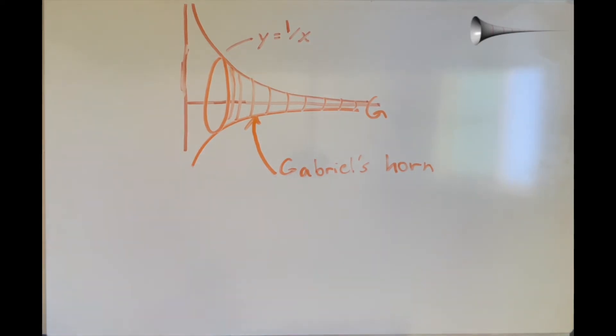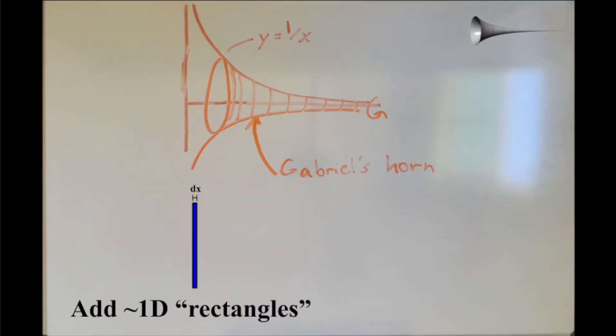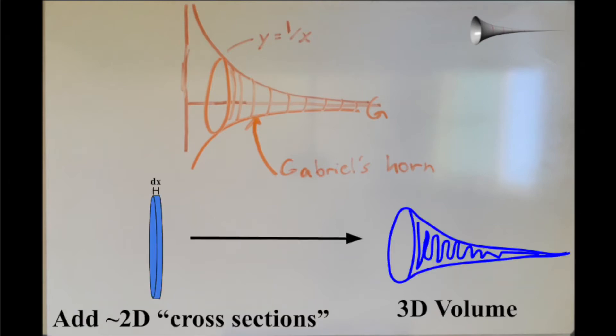In this case, however, instead of adding an infinite number of 1D rectangles to get a 2D area, we're going to add an infinite number of 2D cross-sections to get a 3D volume.